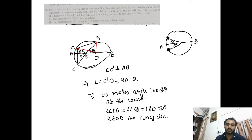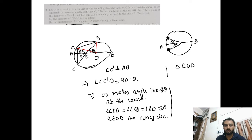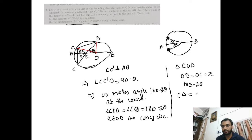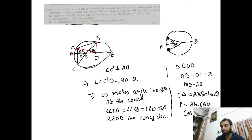Now for the first part: angle CED is a constant. In triangle COD, OD and OC are the radii, and the central angle is 180 minus 2 theta. So chord CD equals 2r sin(90 minus theta), which equals 2r cos theta. Since CD is a fixed chord of constant length L, and R is also constant, cos theta equals L over 2r. So as L and R are fixed, theta is also fixed. This completes question number 2 of RMO.